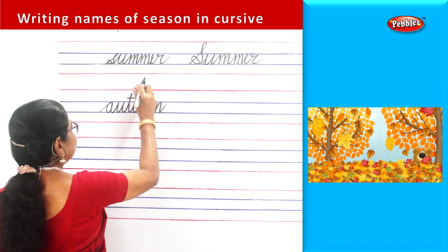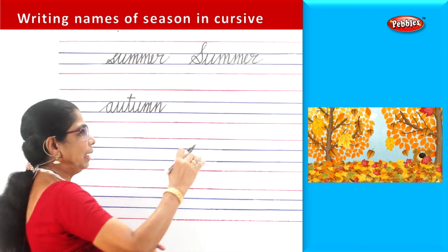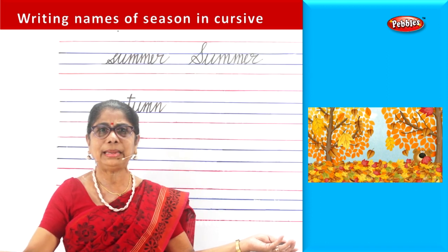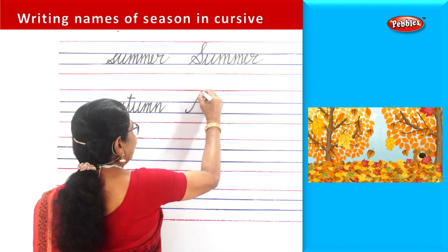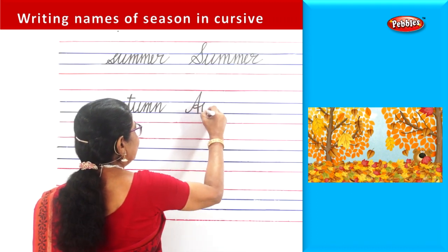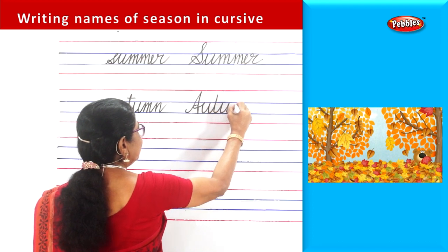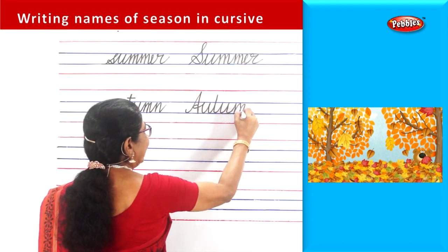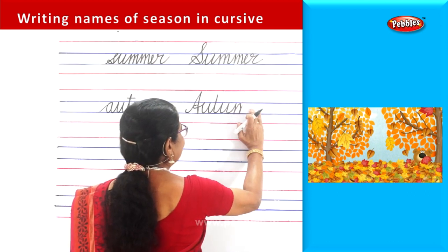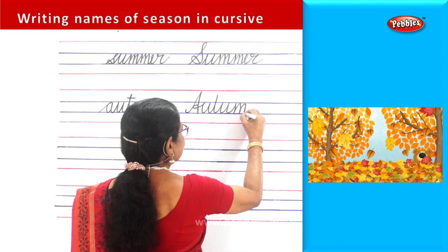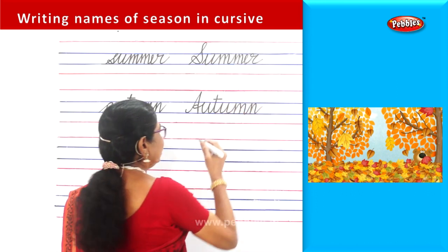Autumn — the time when everything is bare, trees are bare. Let us write: A-U-T-U-M-N. Autumn.